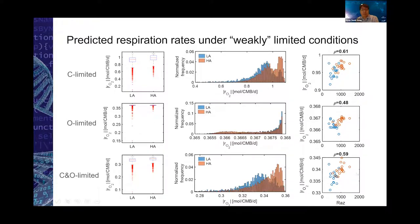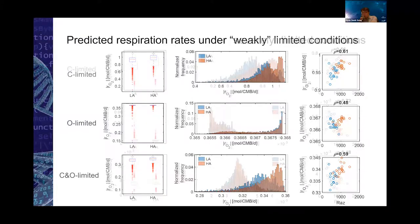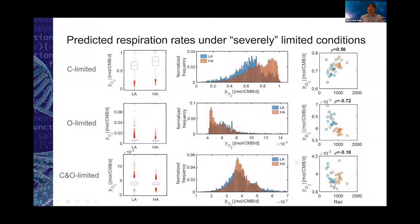When both carbon and oxygen are limited, the correlation is still similar to the carbon-limited case, but the correlation is higher for the carbon-limited condition. From these distributions you can clearly see that the high-activity zone has a larger portion of higher respiration rates. In the second case with lower values of V_H times organic carbon and V_H times oxygen, under carbon-limited conditions I still observe a positive correlation between oxidative reaction and resazurin transformation, but under oxygen-limited conditions the correlation is actually negative.